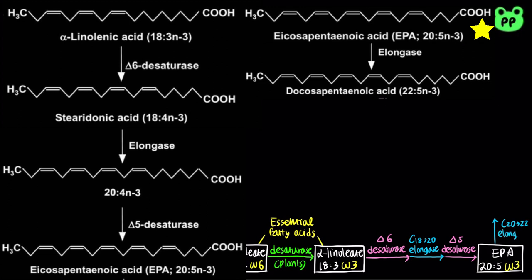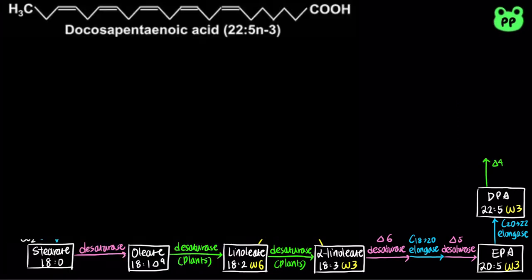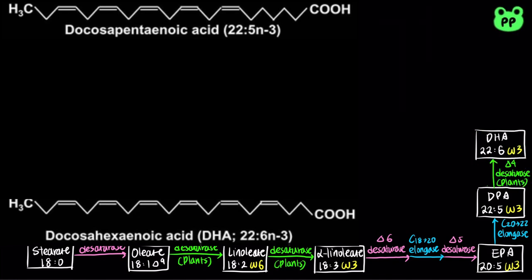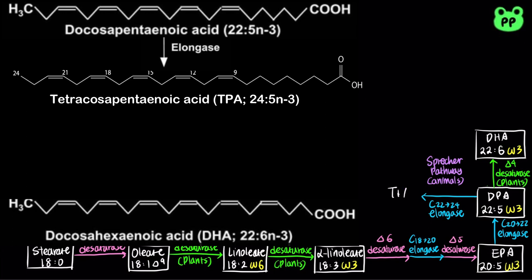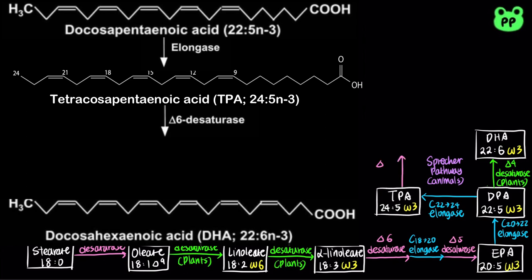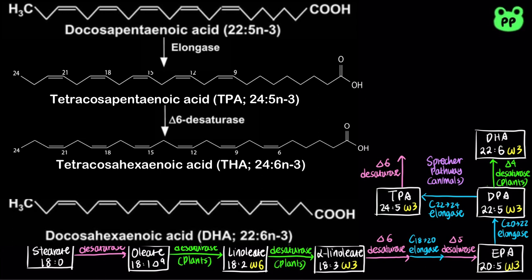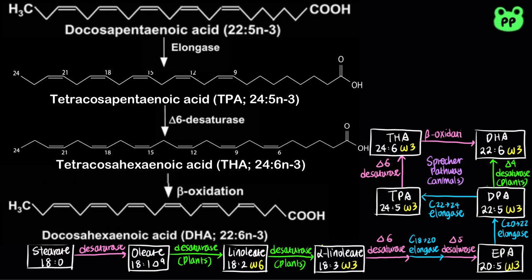EPA can be elongated to the 22-carbon omega-3 DPA, which stands for docosapentaenoic acid. In plants, DPA can be desaturated at the 4th carbon to produce DHA, which stands for docosahexaenoic acid. However, animals lack delta-4 desaturase and rely on another pathway known as the Sprecher pathway to synthesize DHA. First, DPA is elongated to the 24-carbon omega-3 TPA, which stands for tetracosapentaenoic acid. TPA is subsequently desaturated at the 6th carbon to produce the 24-carbon omega-3 THA, which stands for tetracosahexaenoic acid. THA can then undergo one round of beta-oxidation to produce the 22-carbon omega-3 DHA.